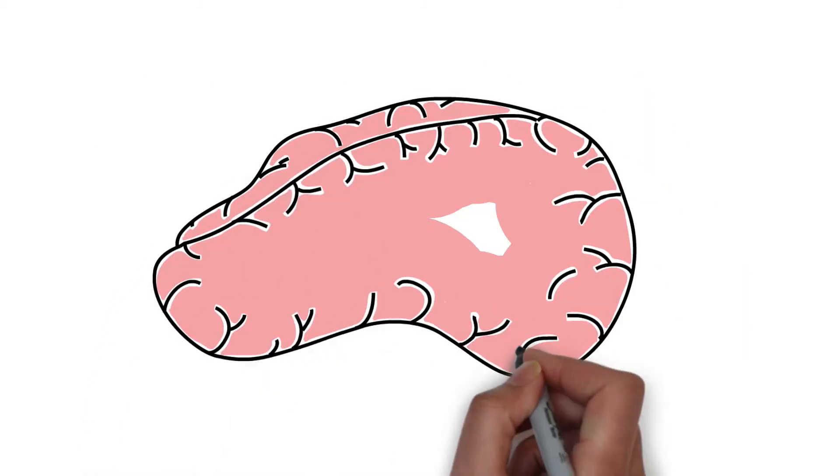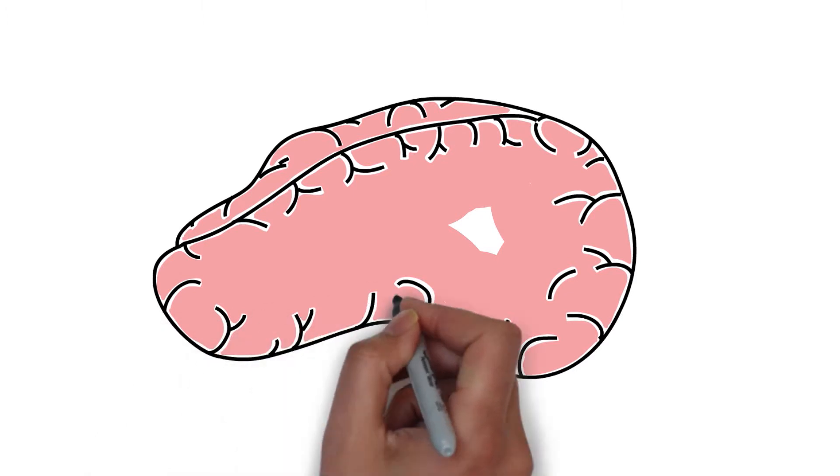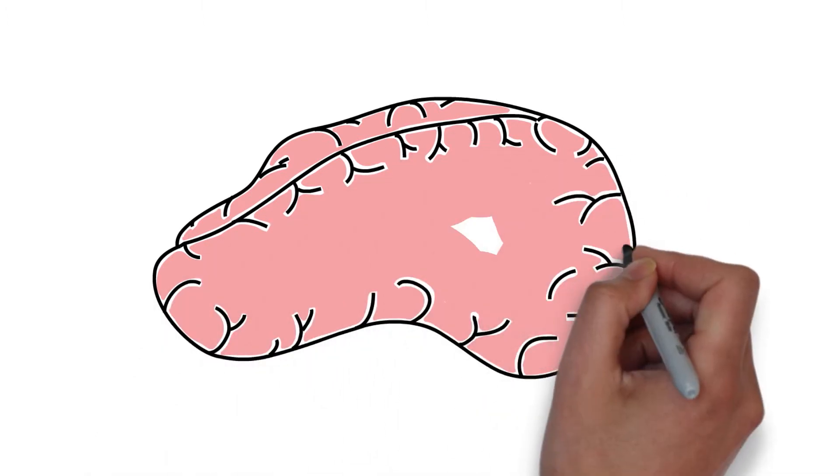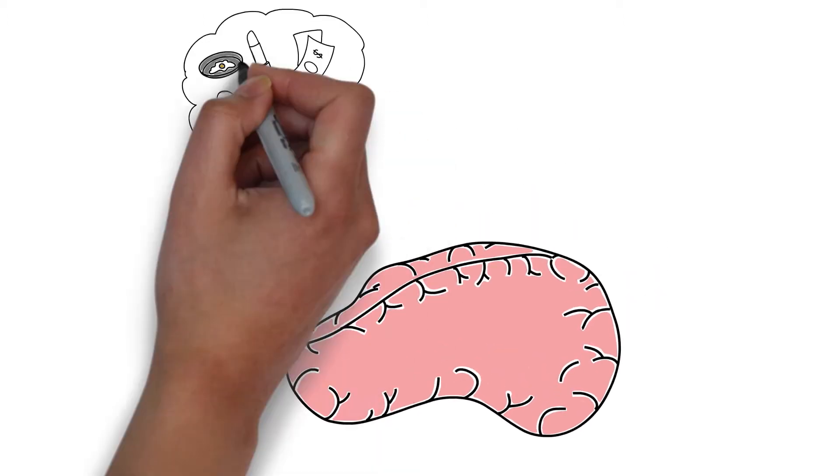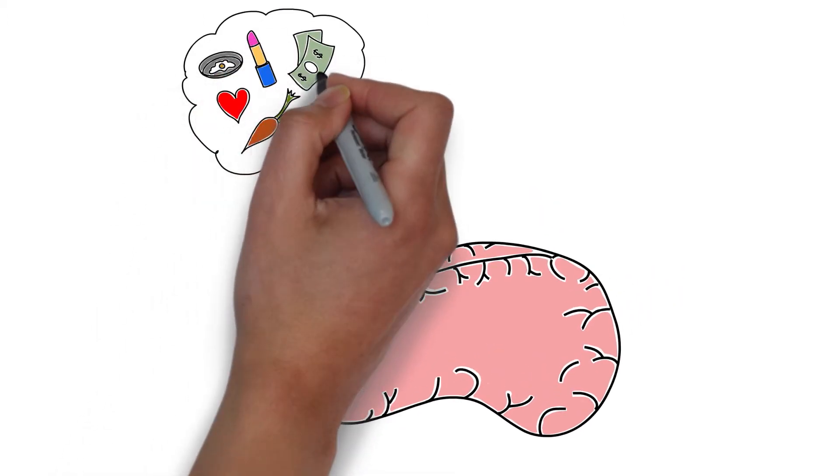Women's brains are designed for multitasking, which helps explain why we can be thinking about the grocery list, the weird rattle in the car, or an argument with our daughter-in-law when our partner is trying to give us his best. All this changes when we orgasm.